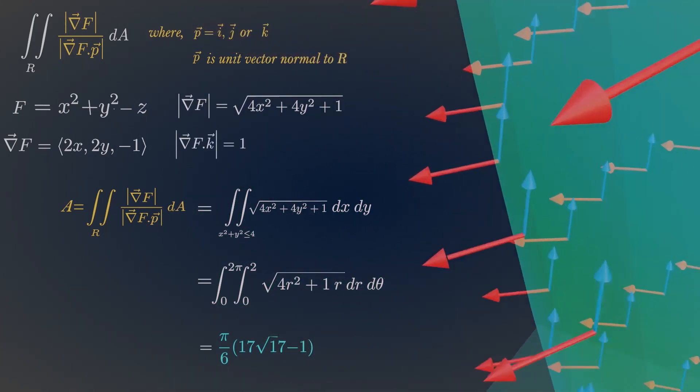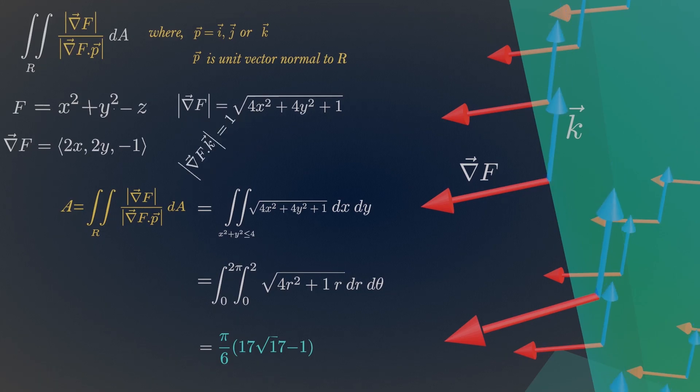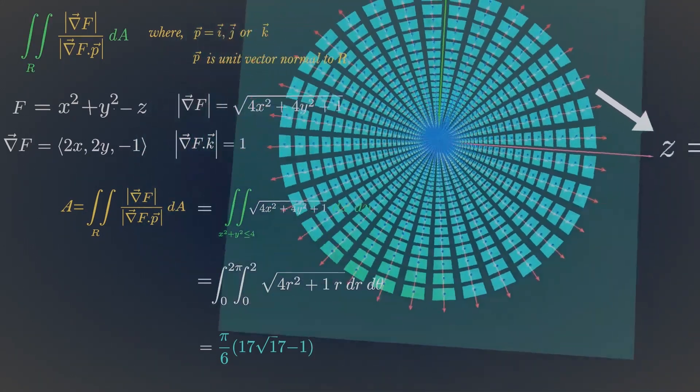Calculate the magnitude of gradient in the direction of unit k vector. Finally, double integrate over the circle.